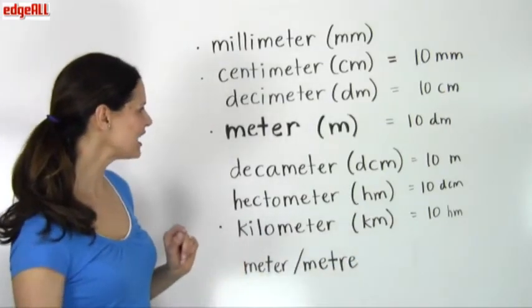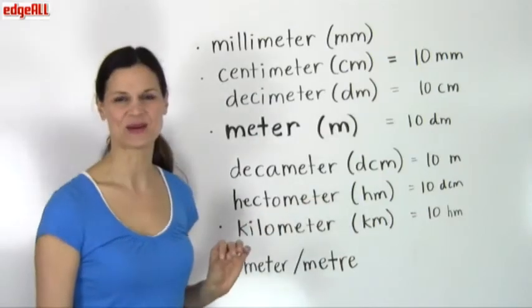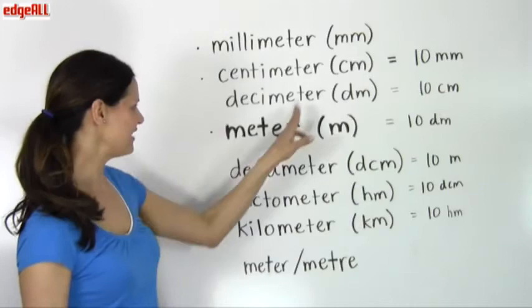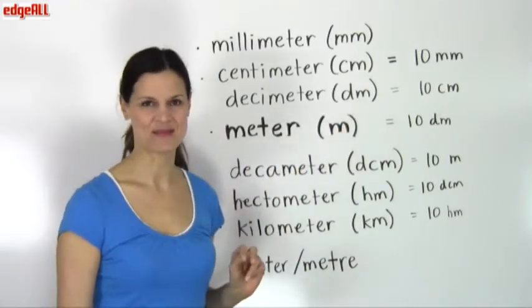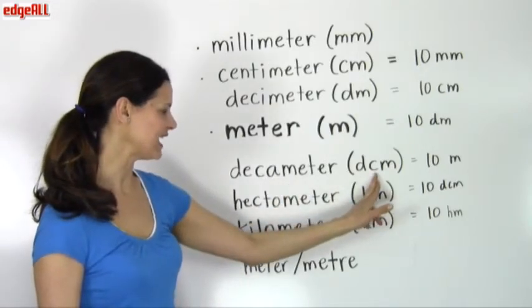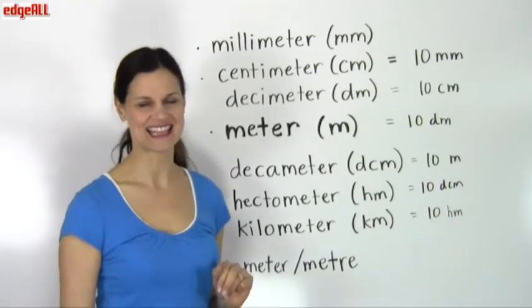Now you need to be extra careful when you're working with a decimeter or decameter. Since they both begin with a D and then have the meter, we can't use DM for both of them. And so you'll see for decameter, there's a C in between, and it's DCM. Sometimes it's easy to get these confused.